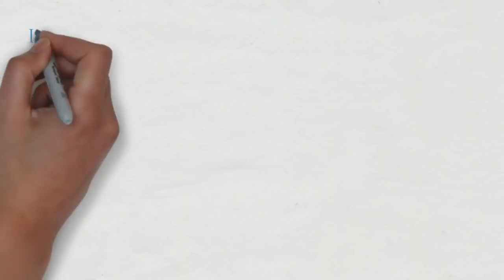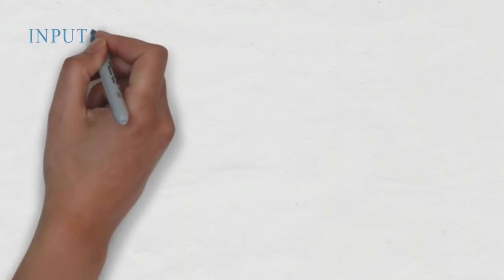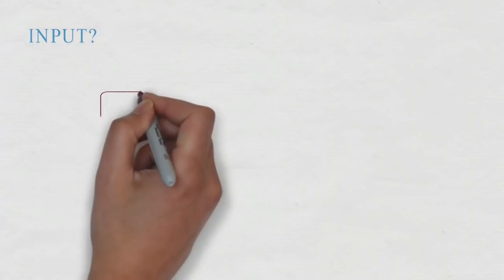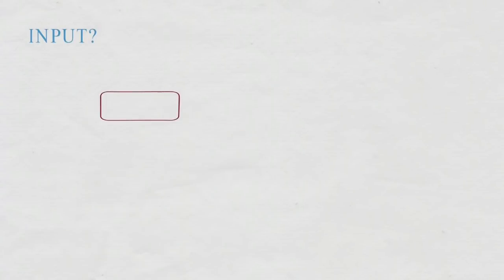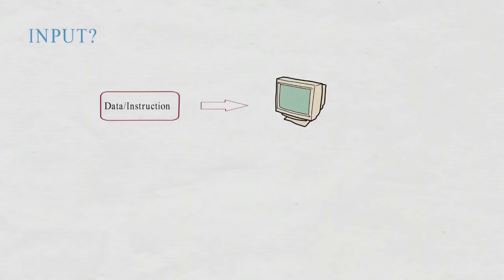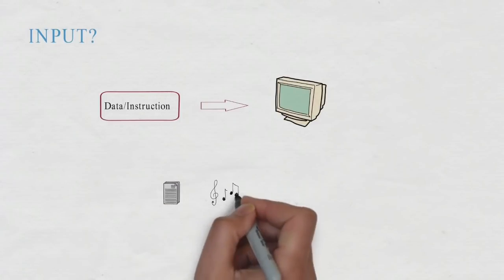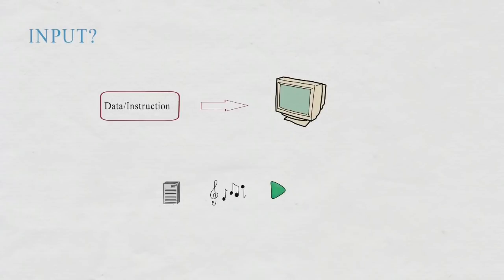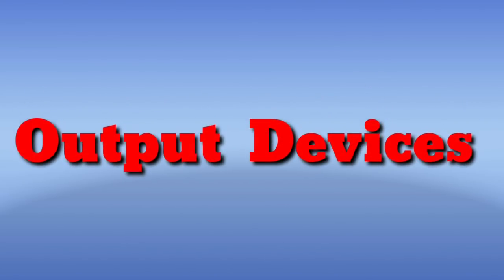Now let's see — the data and instructions entered into a computer are called input. This data can be text, numbers, audio, and videos. Next we are going to learn about output devices.